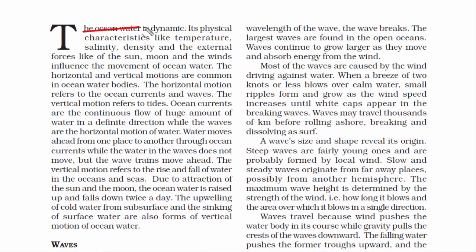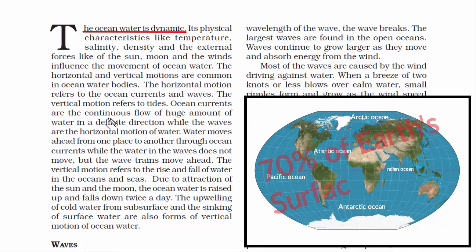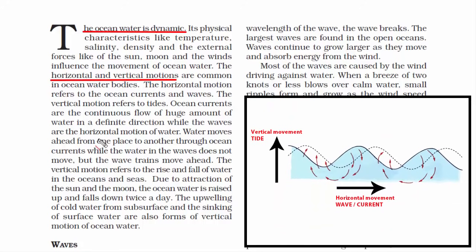Ocean water is never still — it keeps moving. If you look at the world map, all five oceans run into each other; they are interconnected. For educational purposes we have named them Pacific, Atlantic, Indian, Arctic and Antarctic Ocean, but together they form 70% of Earth's surface. Ocean water moves in two ways: horizontal motion and vertical motion.